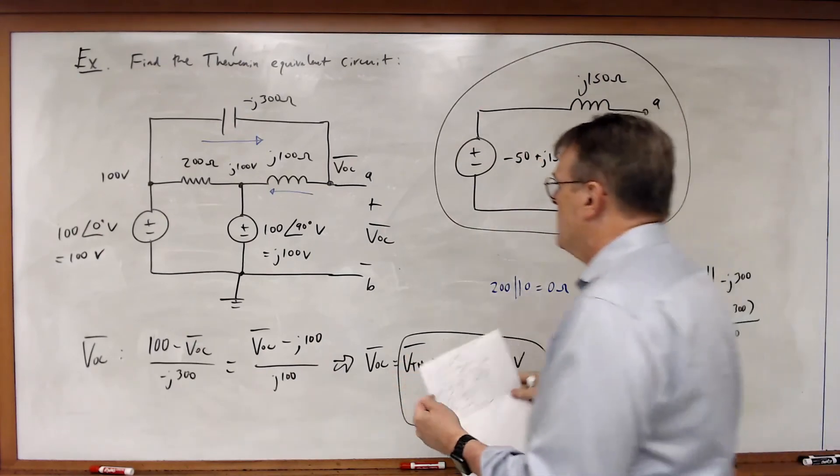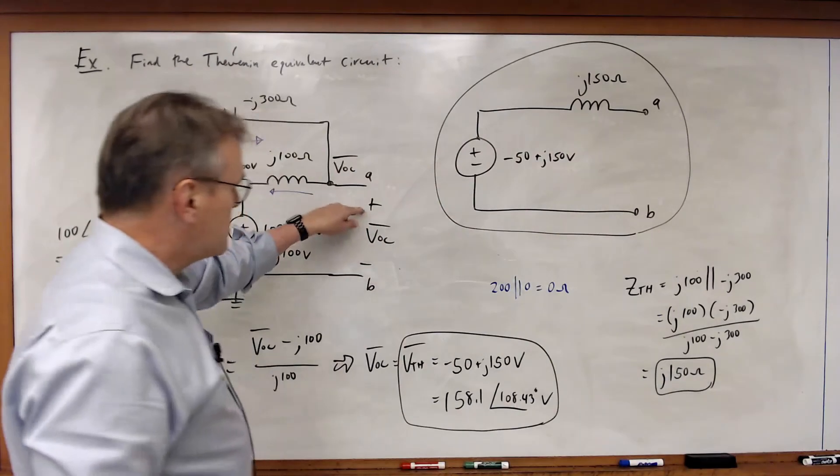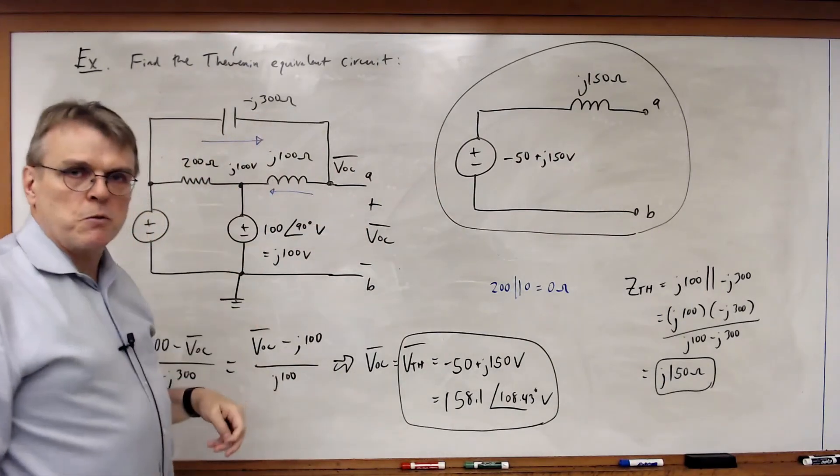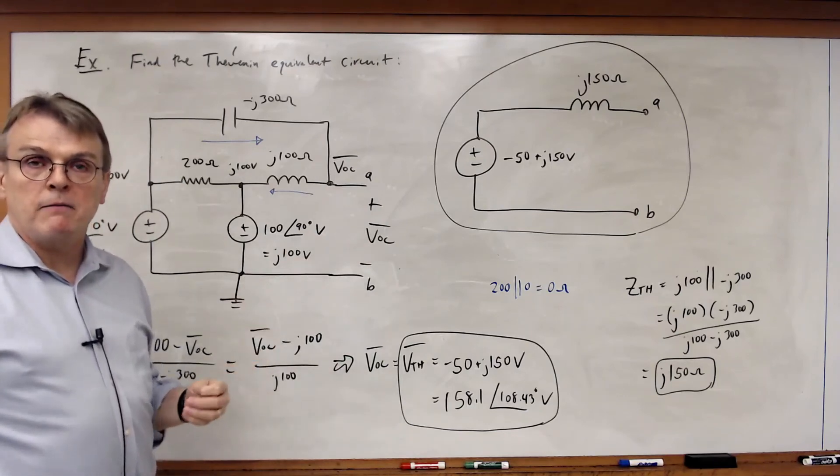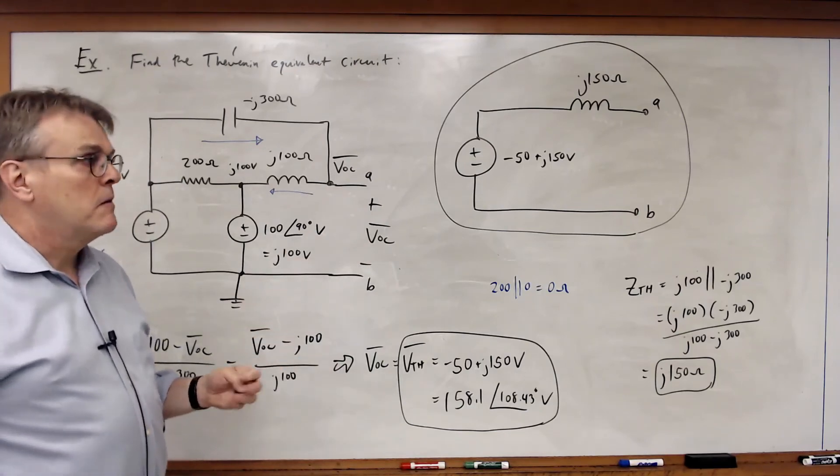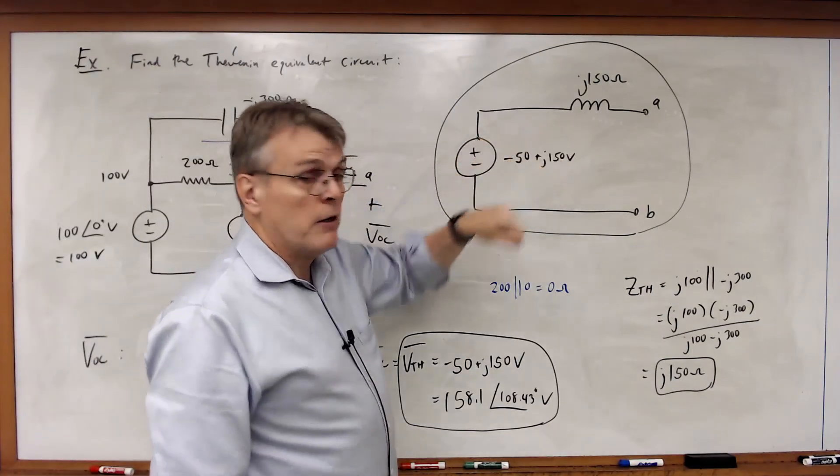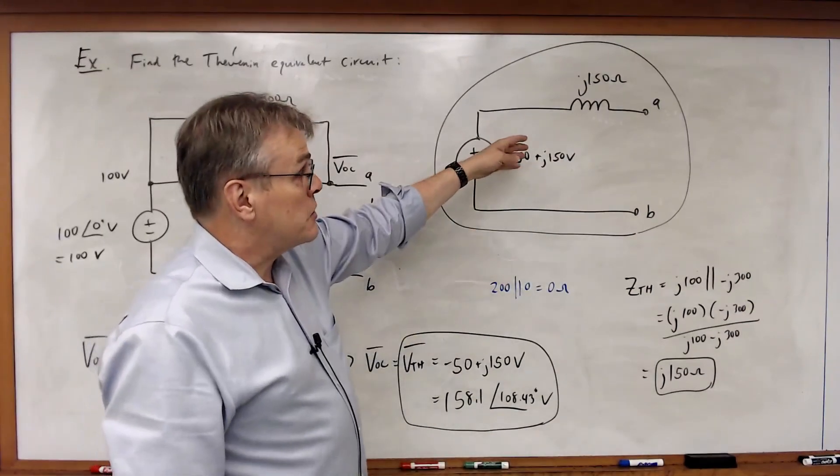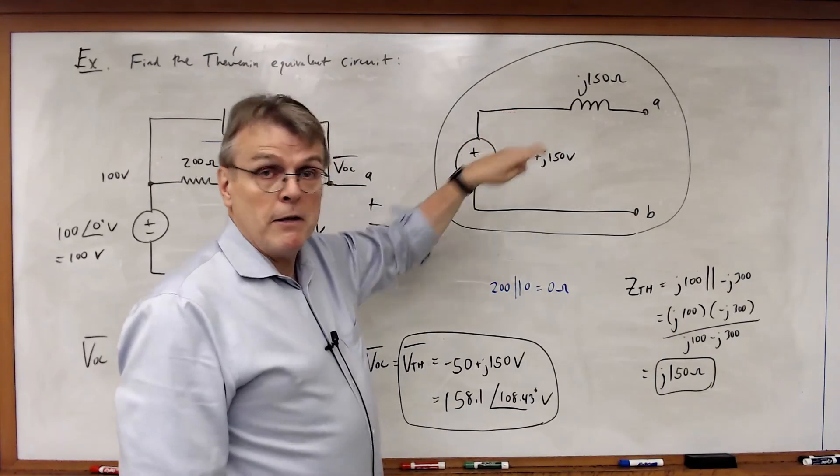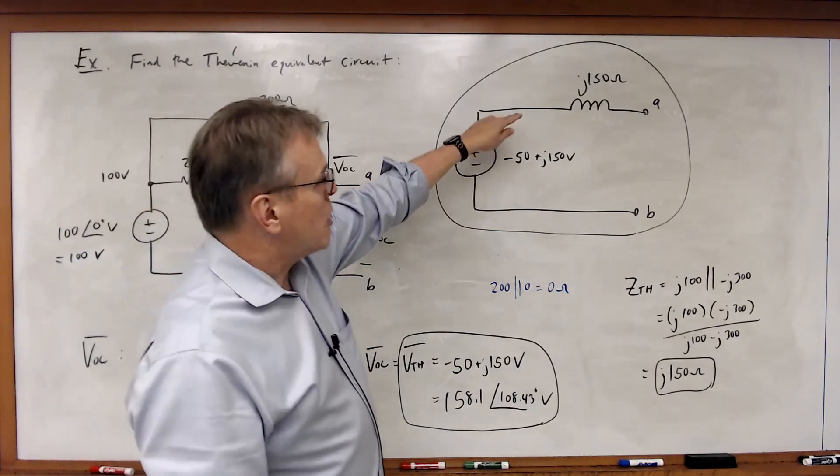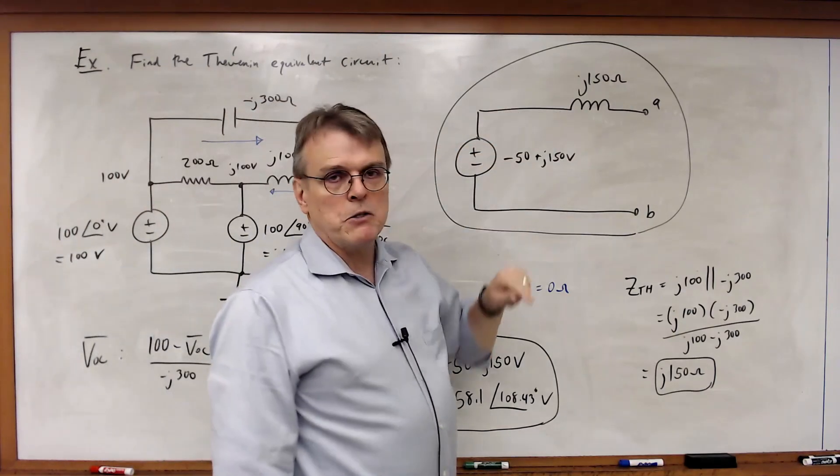A couple of points: we can use element reduction instead of source driving if there are no dependent sources, just as we did with time domain Thevenin equivalent problems. Also, it's possible to get a Thevenin equivalent impedance which contains no real part or no imaginary part.